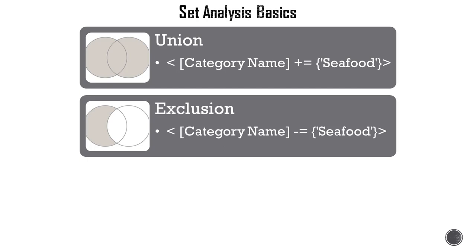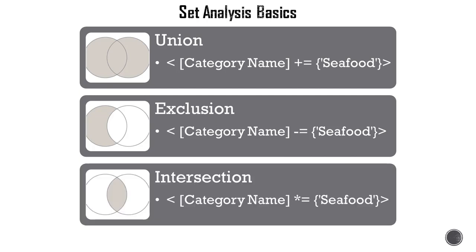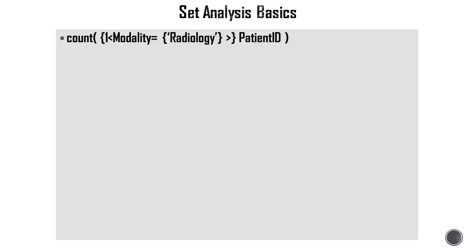Now let's look at exclusion. With minus equal, if a user made a selection on a field called category name, and if the user selected Seafood along with other values, this modifier will exclude Seafood. So it forces the aggregation to exclude Seafood while calculating the value. And then intersection means if a user made selections on several values along with Seafood, then other values will be ignored but Seafood. So it will only include Seafood as category name.